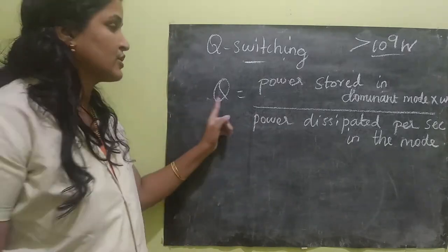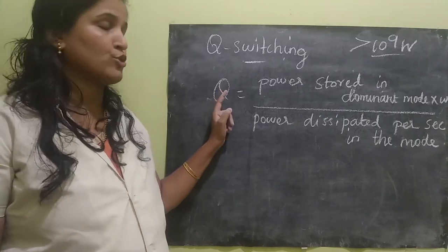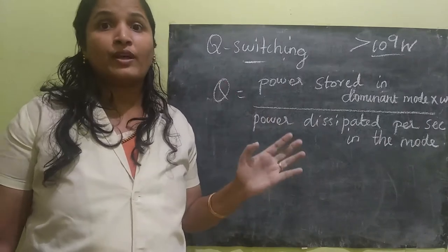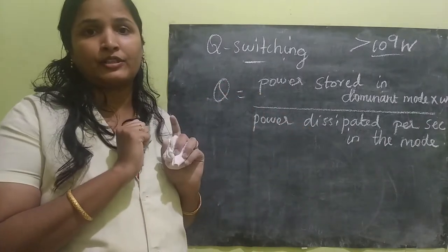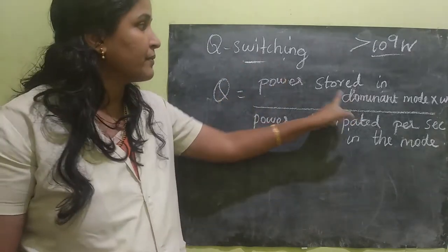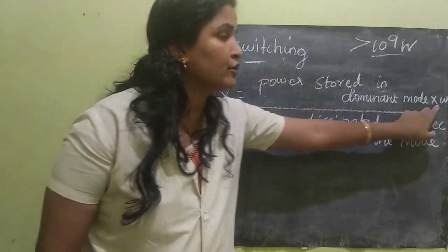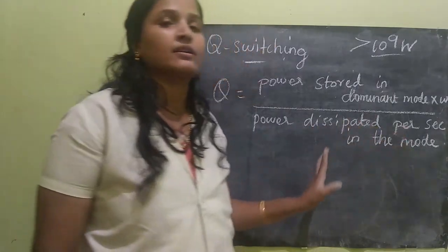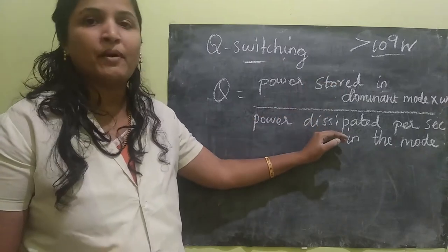First we should know what is Q. The Q-factor is defined as the ratio of power stored in the dominant mode — as we know there are many modes operating in a single laser operation, so we take the dominant mode — multiplied by the total number of modes, divided by power dissipated per second. So it is the ratio of power stored to the power dissipated.